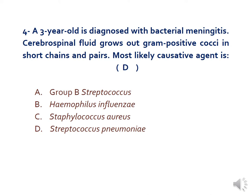The fourth question: a three-year-old is diagnosed with bacterial meningitis. CSF grows gram-positive cocci in short chains and pairs. The most likely causative agent is Streptococcus pneumoniae. At this age group with this finding, based on morphology, Streptococcus pneumoniae is the right answer. Streptococcus pneumoniae is responsible for 10 to 20 percent of meningitis cases in children.